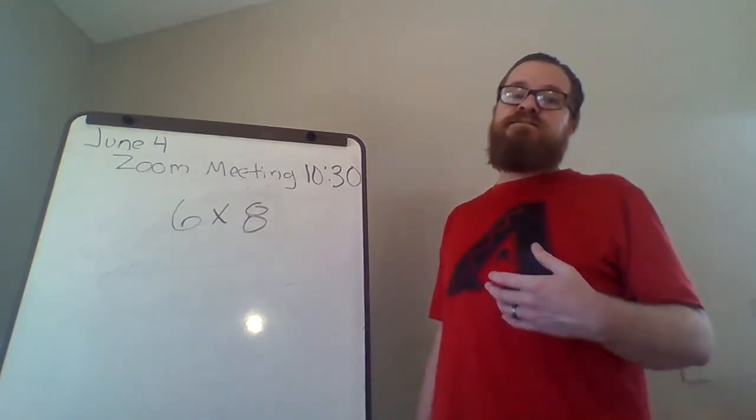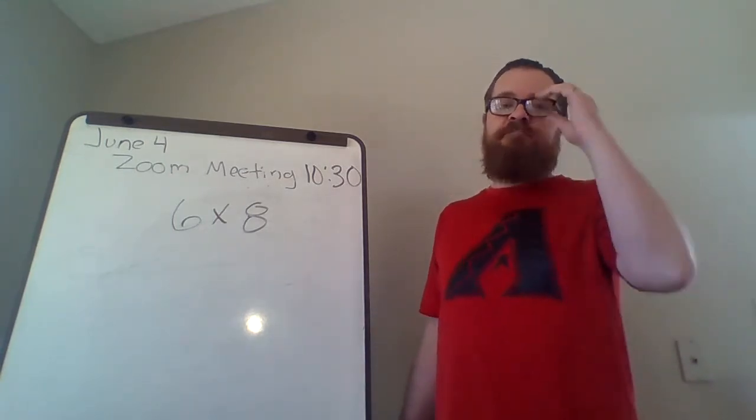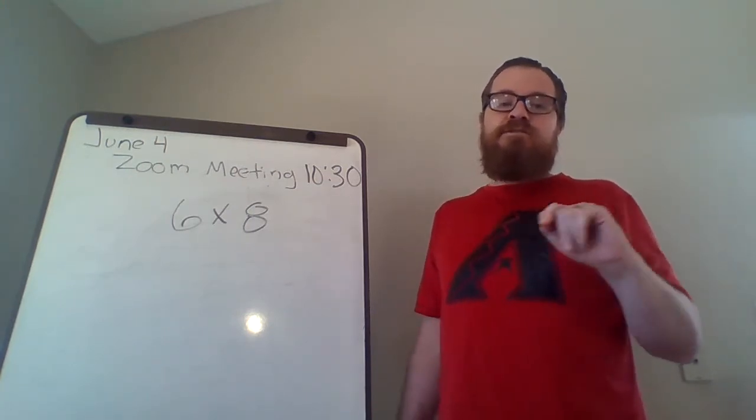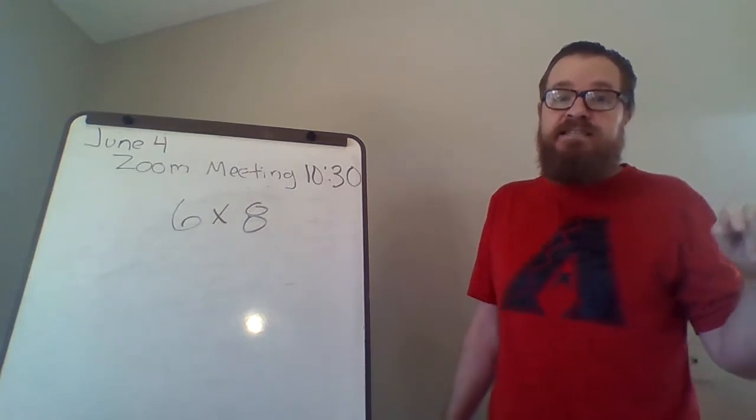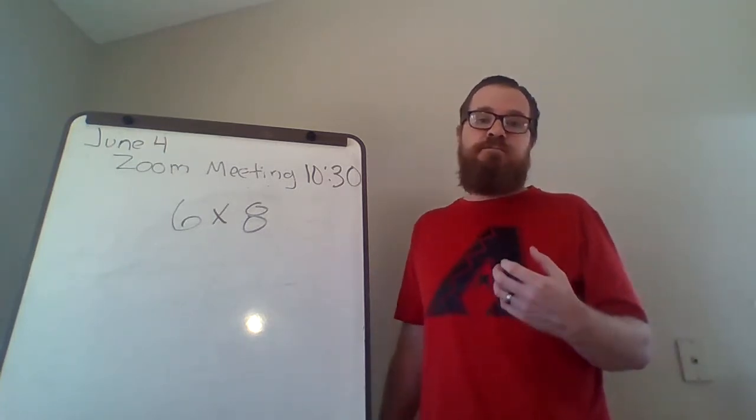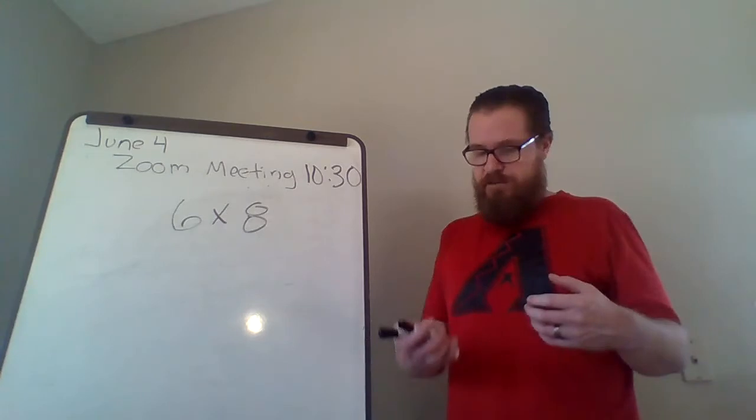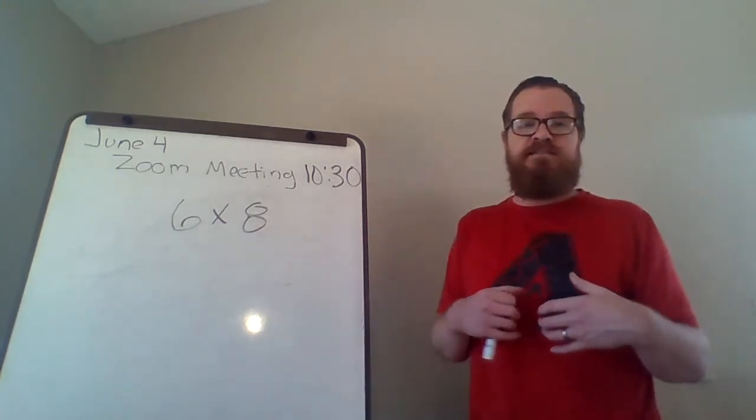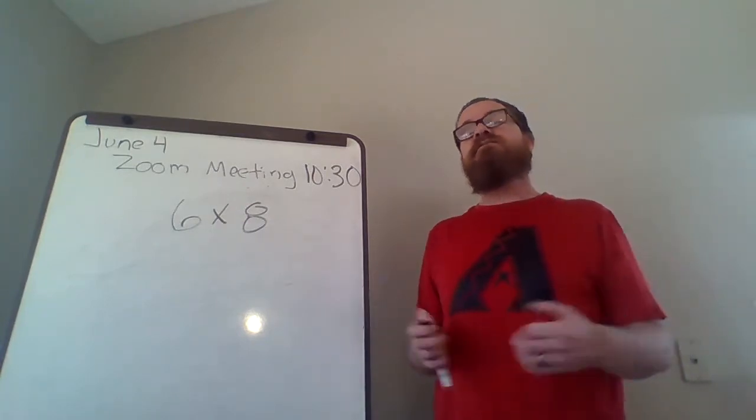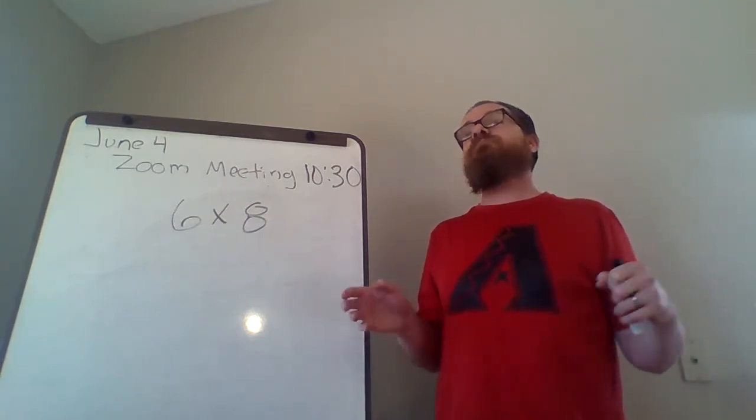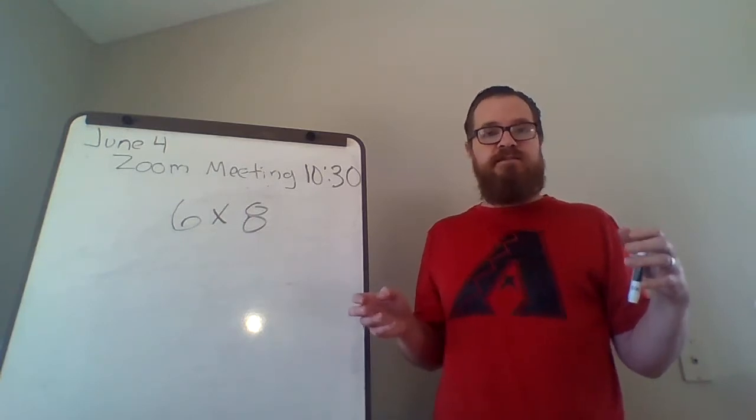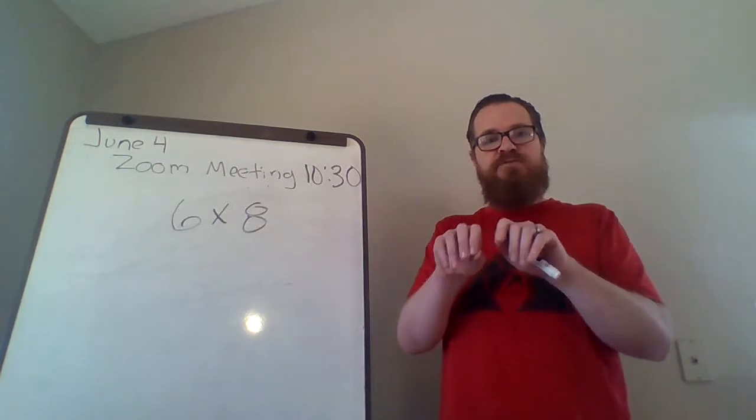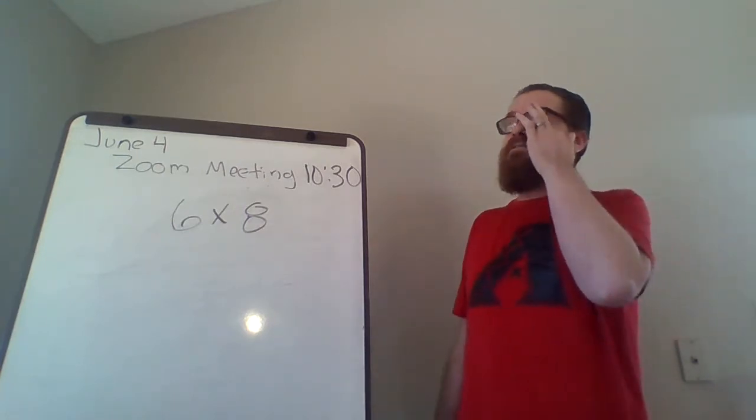Now today, we're going to talk about the distributive property. Distributive property is a slightly more complicated property. It basically says if you have big numbers that you're multiplying, you can break them up into smaller pieces, multiply them, and then add the pieces together. So what it does is it lets us take something that would have been a really complicated problem in some cases and make it into easier sections and then combine those sections.